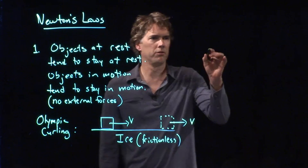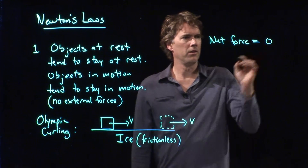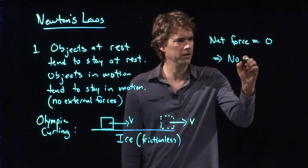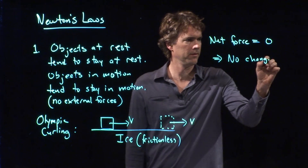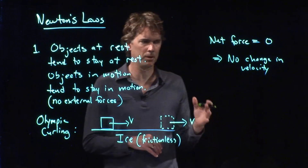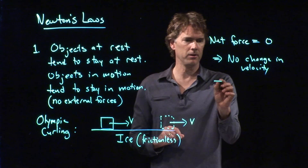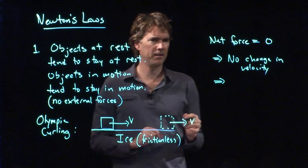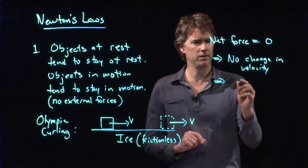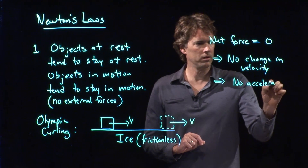One way to think about Newton's first law is this: the net force is equal to zero, and therefore there is no change in velocity. That velocity could be zero and at a later time it would still be zero, or it could be some value and at a later time it would still be that value. We know that change in velocity is acceleration — A is delta v over delta t — so this must mean that there is no acceleration.